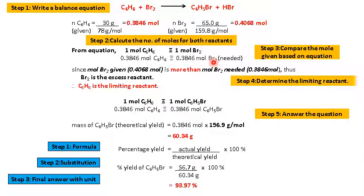So 0.3846 mol of benzene equivalent to 0.3846 mol of bromine. So based on the number of moles given is 0.4068 mol. Needed is 0.3846 mol. So it's more than, meaning that bromine is excess reactant. Automatically benzene is the limiting reactant.